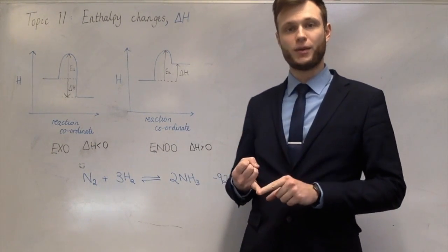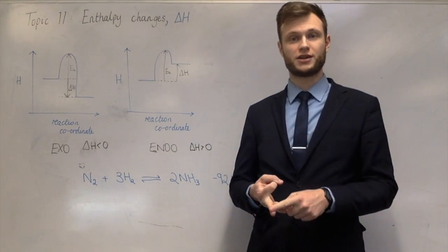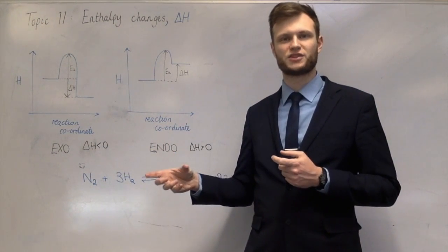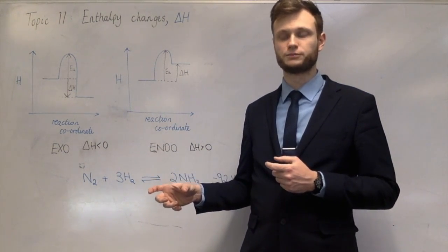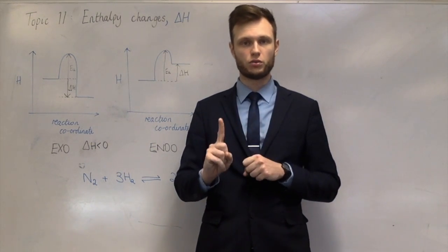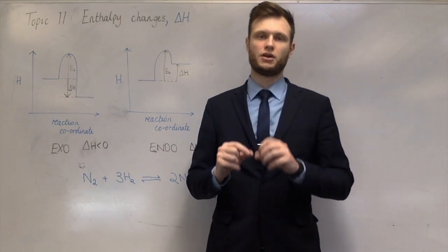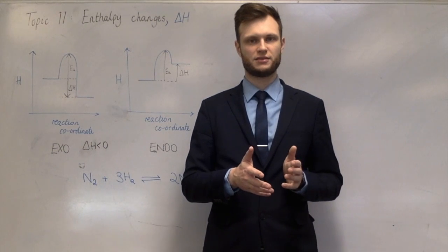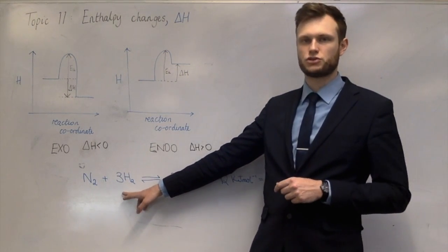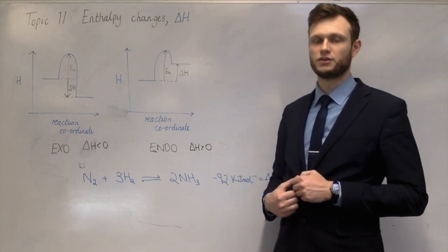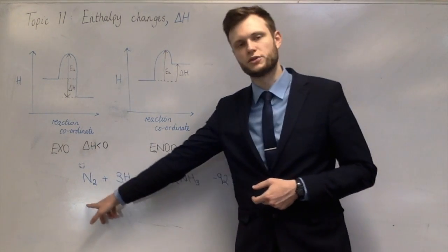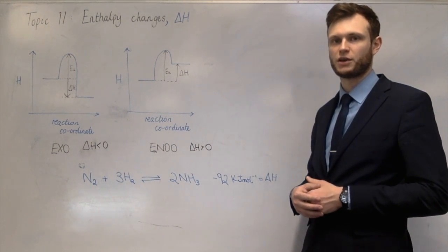We've also got enthalpy changes of formation, combustion, and neutralisation, which help us compare values and use them in other equations. The enthalpy change of formation is specifically the enthalpy change which accompanies the formation of one mole of a compound from its elements under standard conditions with everything in its standard states. For instance, the formation of ammonia would be ½N₂ plus ³⁄₂H₂ making 1 mole of NH₃, and the standard enthalpy change of formation of ammonia is minus 46 kilojoules — half the reaction value.